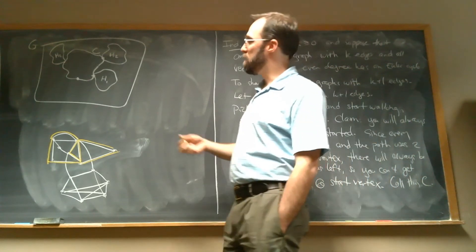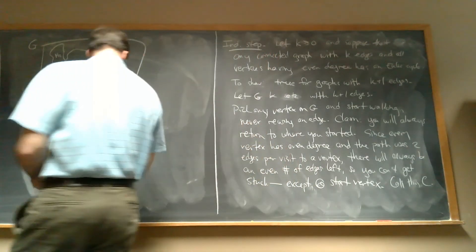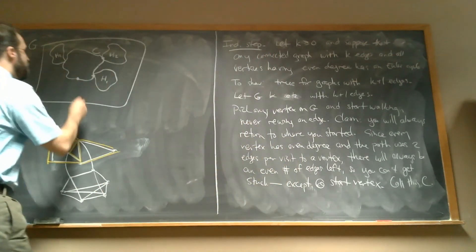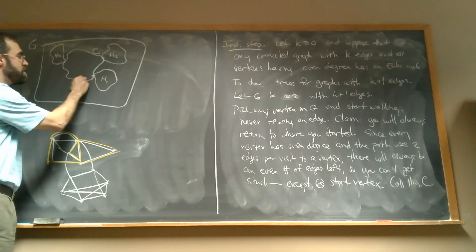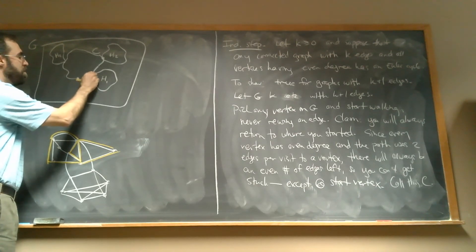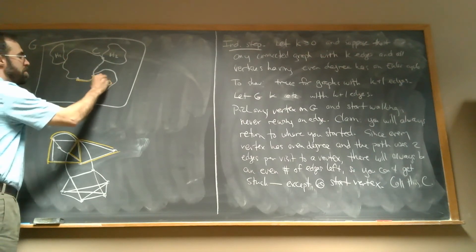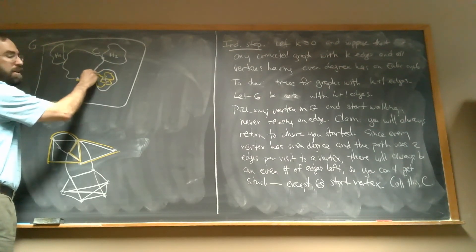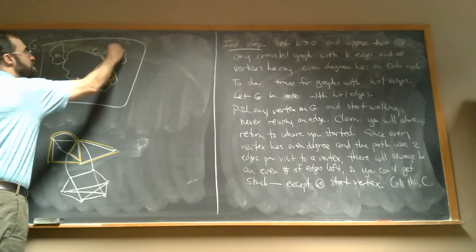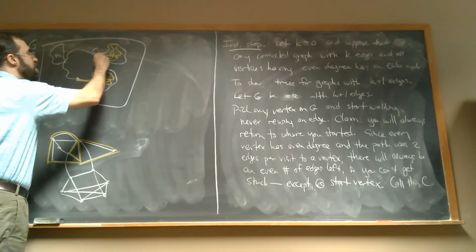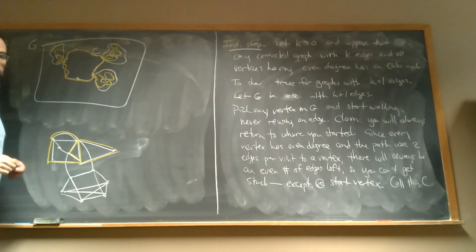Once I find those Euler cycles, I can splice them in. In the end, I start here, go along the cycle I found first, but when I get to one of these other pieces, I go do the Euler cycle in there, then rejoin my original cycle, keep going, and so on. Eventually, I'm going to make it through the entire graph.